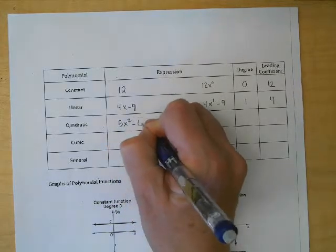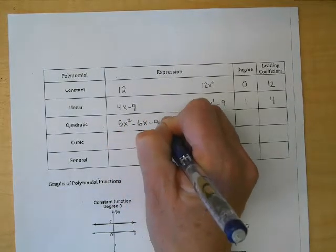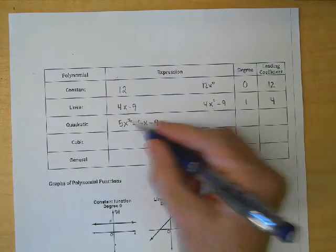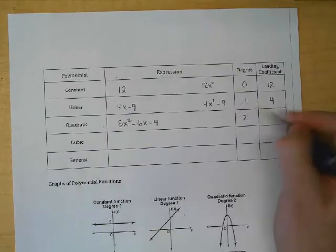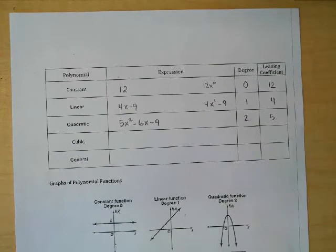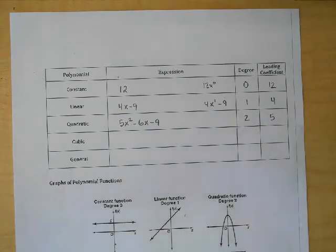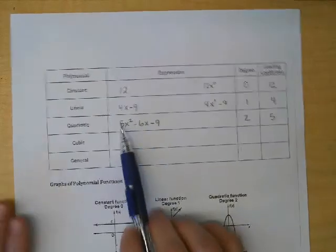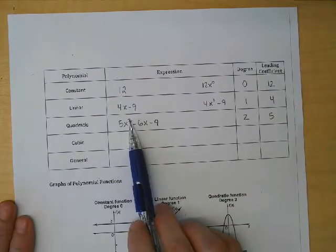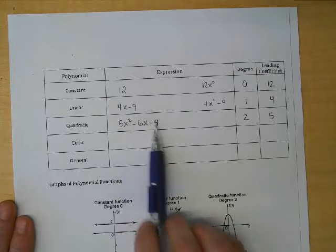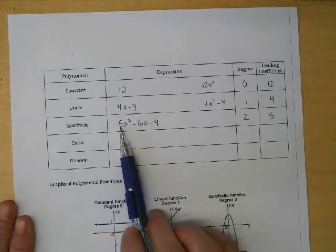Something that's quadratic would be like 5x² - 6x - 9. We would say its degree is two and its leading coefficient is 5. The leading coefficient isn't necessarily the first number - it's the number in front of the term with the highest power.